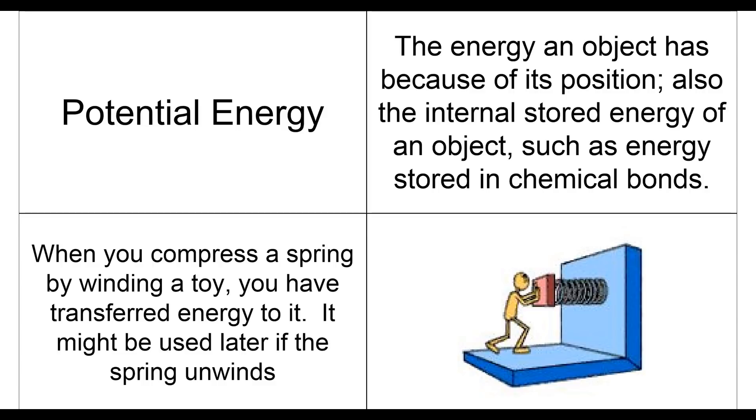So the example that I have for you is when you compress a spring by winding a toy, you have transferred energy to it. It might be used later if the spring unwinds. So, with potential energy, and we'll talk about, we'll get there. But basically, it's the potential for energy to be released. And so in this example here, if we have this spring, and we went in and we pushed it, we compressed it,